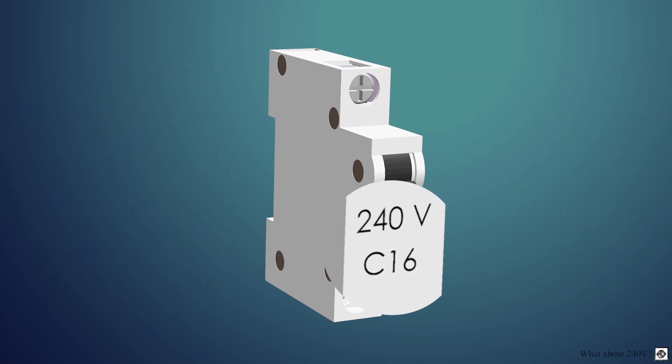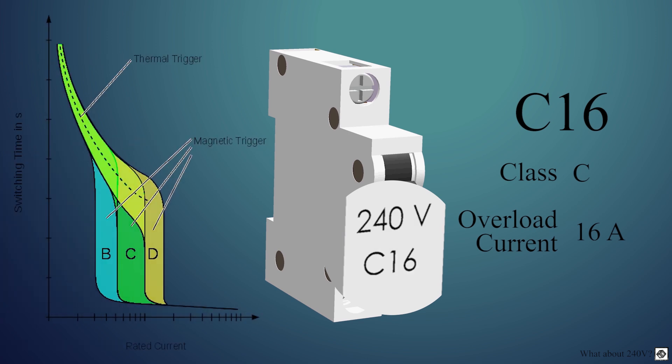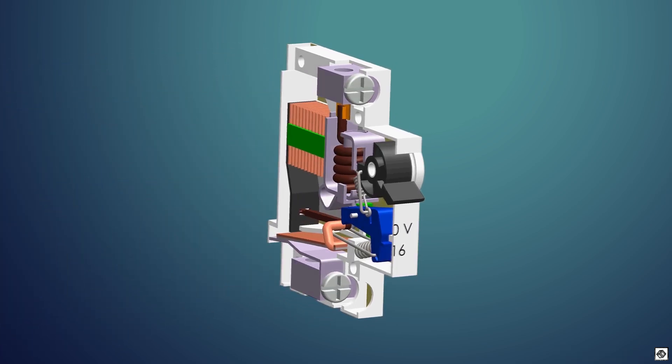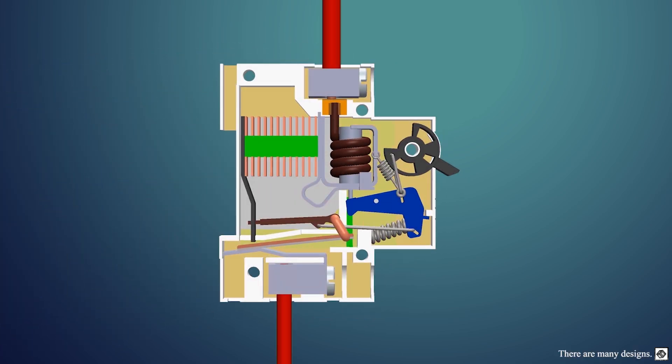This MCB has C16 written on it. Thus, this is of class C with an overload current of 16 amps. Let's remove the rivets and open it. This is the input side where the phase wire is connected.